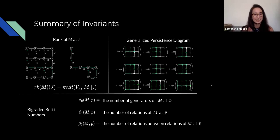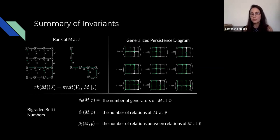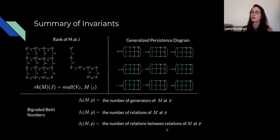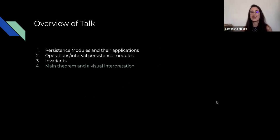To summarize the invariants: the rank invariant takes a connected set J, restricts M to J, decomposes it, and counts full-support interval modules — returning an integer. The generalized persistence diagram takes a connected set and returns an alternating sum of rank values on nearby connected sets. The bi-graded Betti numbers count generators (zeroth), relations (first), and relations between relations (second).